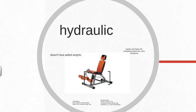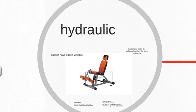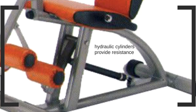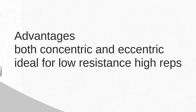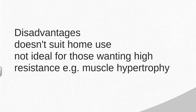The last type of equipment is hydraulic weight machines. These are very expensive and generally found in high-end gymnasiums. They don't have added weights — instead they work on hydraulic cylinders that provide resistance. The harder and faster the individual pushes, the greater the resistance provided. Advantages include delivering both concentric and eccentric contractions, and being ideal for low-resistance, high-repetition exercises, making them well suited to circuit classes. Disadvantages are their cost, space requirements, and they are not ideal for those wanting high resistance or significant muscle hypertrophy.